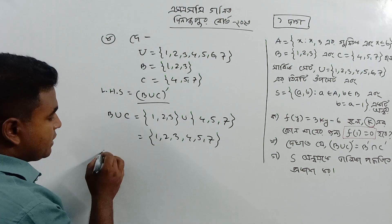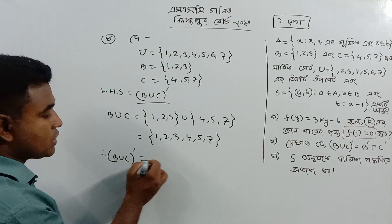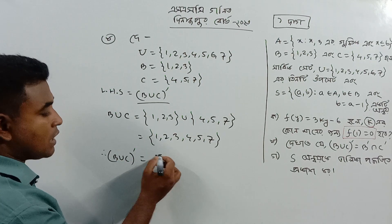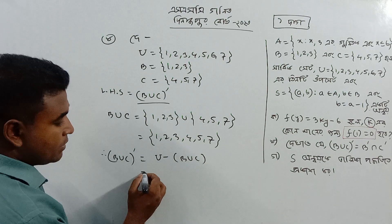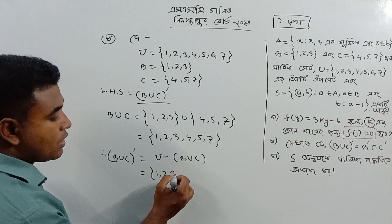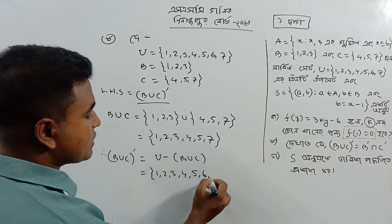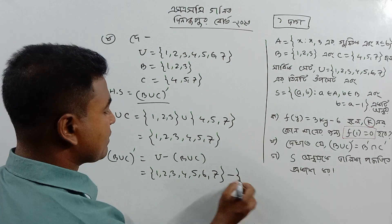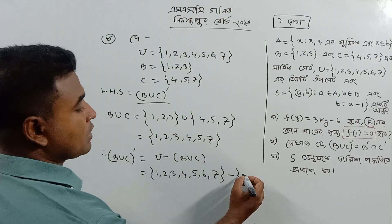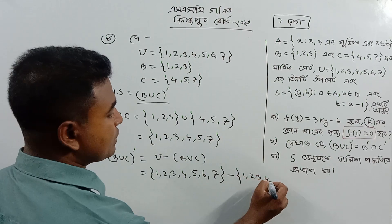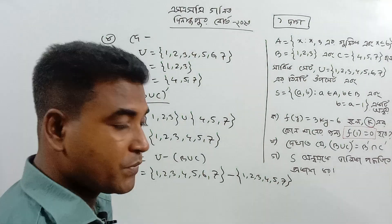The result is correct. So B union C is equal to {1, 2, 3, 4, 5, 7}. We need to verify this. Union C equals {1, 2, 3, 4, 5, 7}.